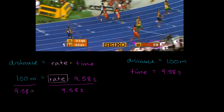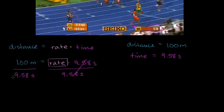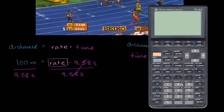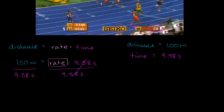So I divide by 9.58 seconds. On the right-hand side, these two cancel out. And then on the left-hand side, I'm left with 100 divided by 9.58, and my units are meters per second — which are the exact units I want for rate or speed. So let's get the calculator out to divide 100 by 9.58. 100 meters divided by 9.58 seconds gives me about 10.4 — so this gives us 10.4 meters per second, which equals our rate.